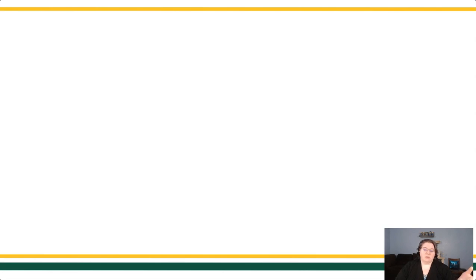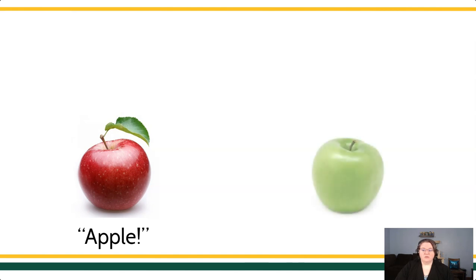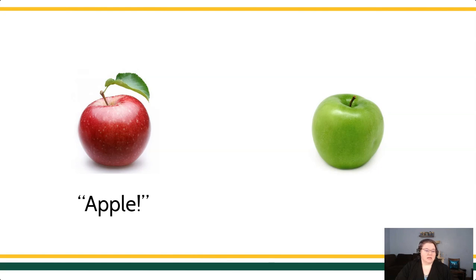Let's go back to our apple-orange example. In the presence of this stimulus, if I were to say 'what's this?' — this apple is an SD for the response 'Apple,' and if you emit that response, you'll contact the reinforcer. But what if I present you with a new item you've never seen before? If you emit that same response, 'Apple,' you'll contact reinforcement. But what happens when we present someone with this new stimulus and they give no response? In this case, generalization has not occurred because they have not emitted the same response, 'Apple,' in the presence of this green fruit.